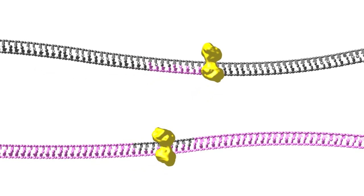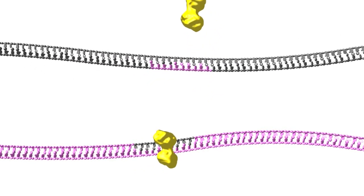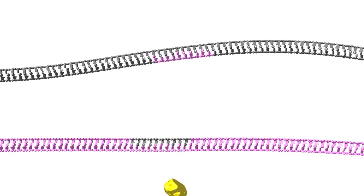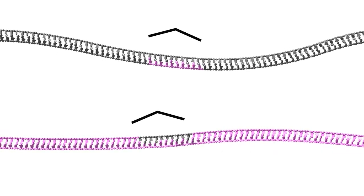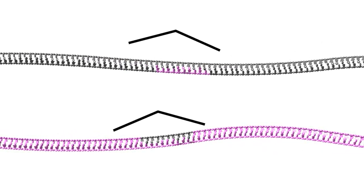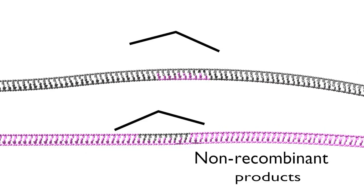Ligation of the cleaved strands generates pairs of progeny duplexes. Holliday junction cleavages along the horizontal axis result in product duplexes in which the parental segments remain covalently linked — they have not been exchanged. These duplexes are called non-recombinant products.